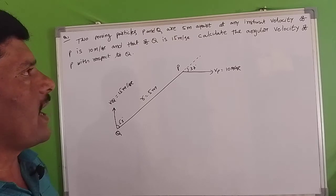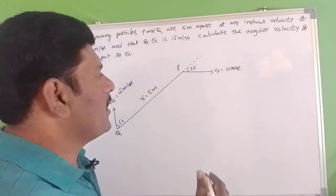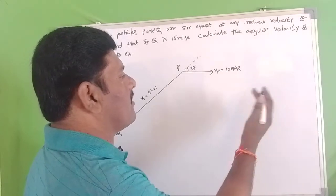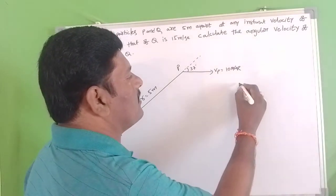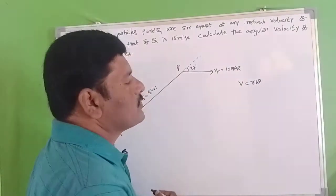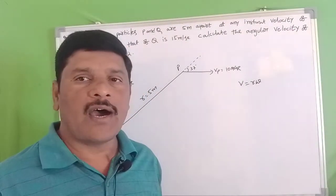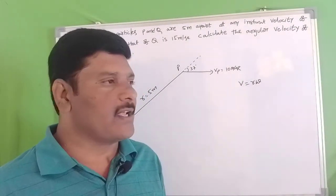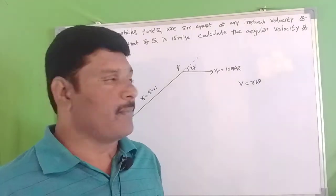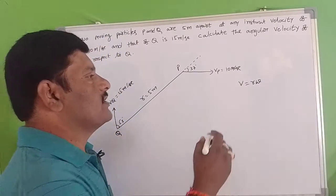We'll find the angular velocity. We already know that the angular velocity and linear velocity relation is V equal to R omega, where V is the linear velocity and R is the perpendicular distance between V and omega.